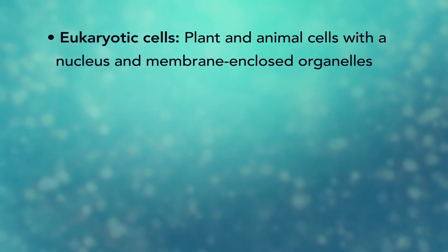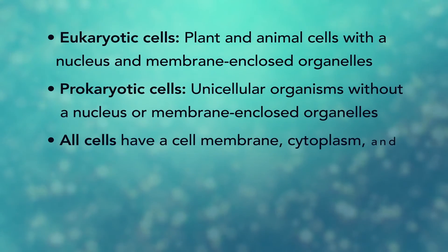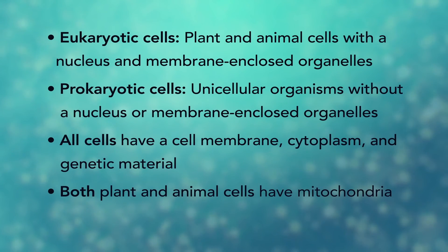In summary, remember, eukaryotic cells are plant and animal cells with a nucleus and membrane-enclosed organelles, while prokaryotic cells are unicellular organisms without these things. All cells have a cell membrane, cytoplasm, and genetic material. And even though only plant cells have chloroplasts, both plant and animal cells have mitochondria.